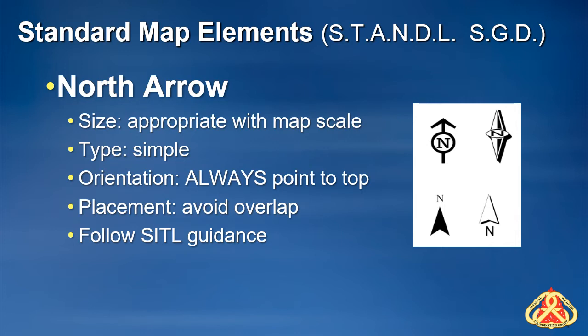The North Arrow is the graphical display used to orient the map correctly. This element could also include additional direction indicators for magnetic declination or grid angle. North should always be pointing towards the top of the map. The standard incident products are not the appropriate place to be creative — this is a safety issue. On the standard incident products, keep the North Arrow simple for ease of reproduction. The size should be appropriate with the scale of the map. Watch the placement of the North Arrow so that it does not overlap any existing map elements such as the name of a landmark.